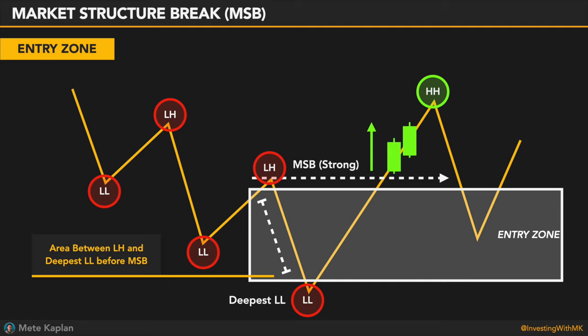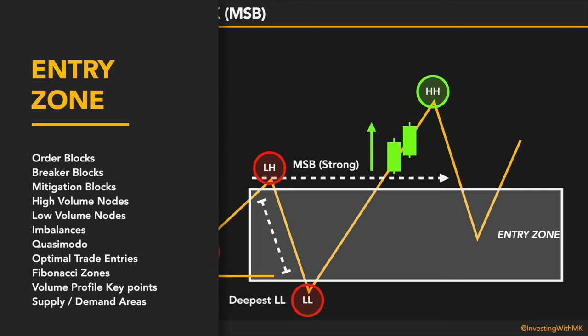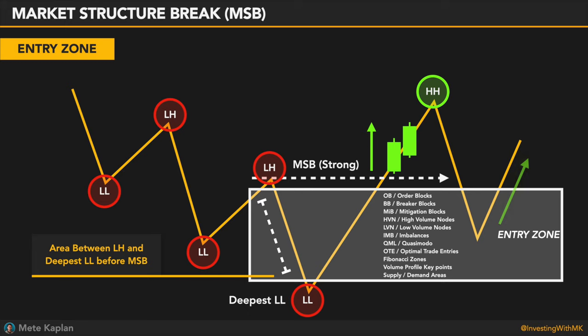Why is this an extremely important entry zone? Because this is where all the market makers and institutional entries happen. There are order blocks, breaker blocks, mitigation blocks, high volume nodes, low volume nodes, imbalances, Quasimodo, optimal trade entries, Fibonacci zones, volume profile key points, and supply and demand areas — so you can use sniper trading price action levels from any of those.